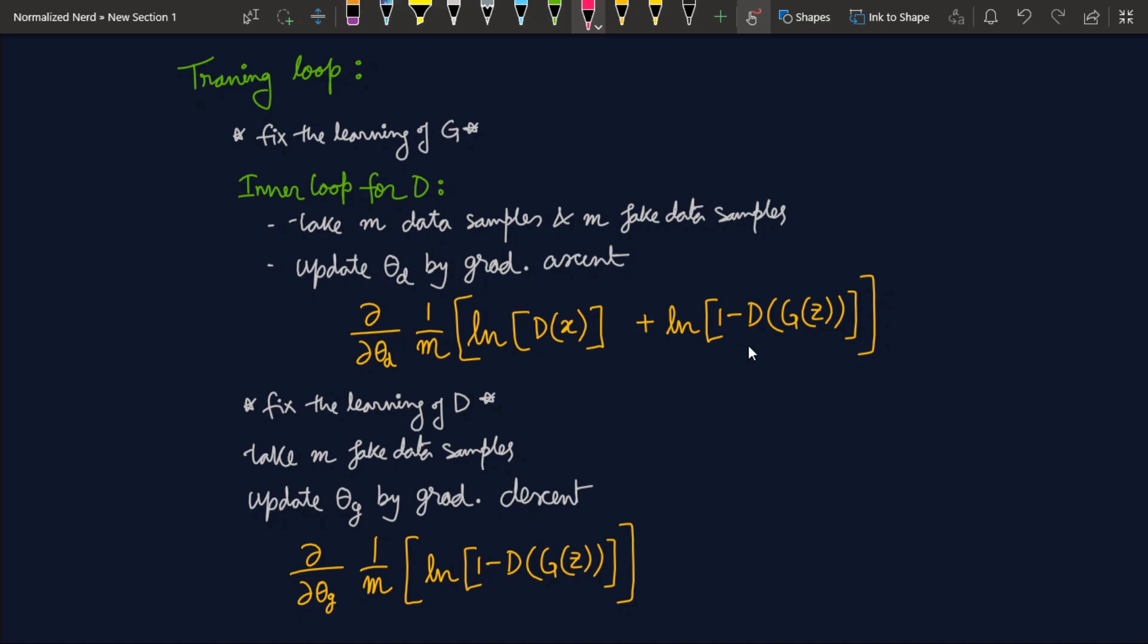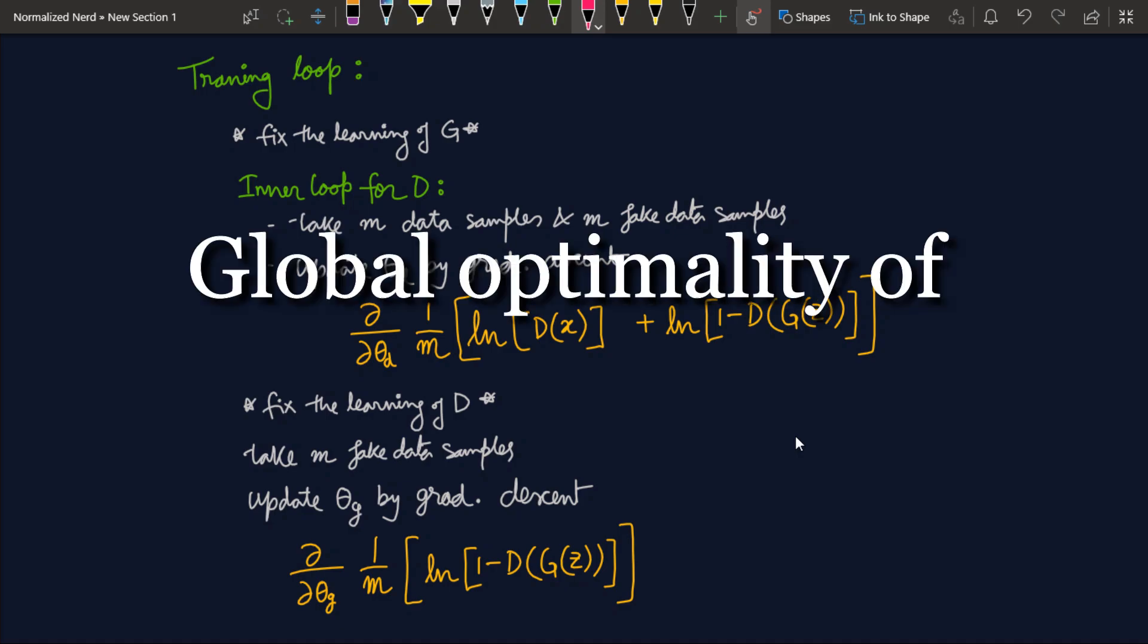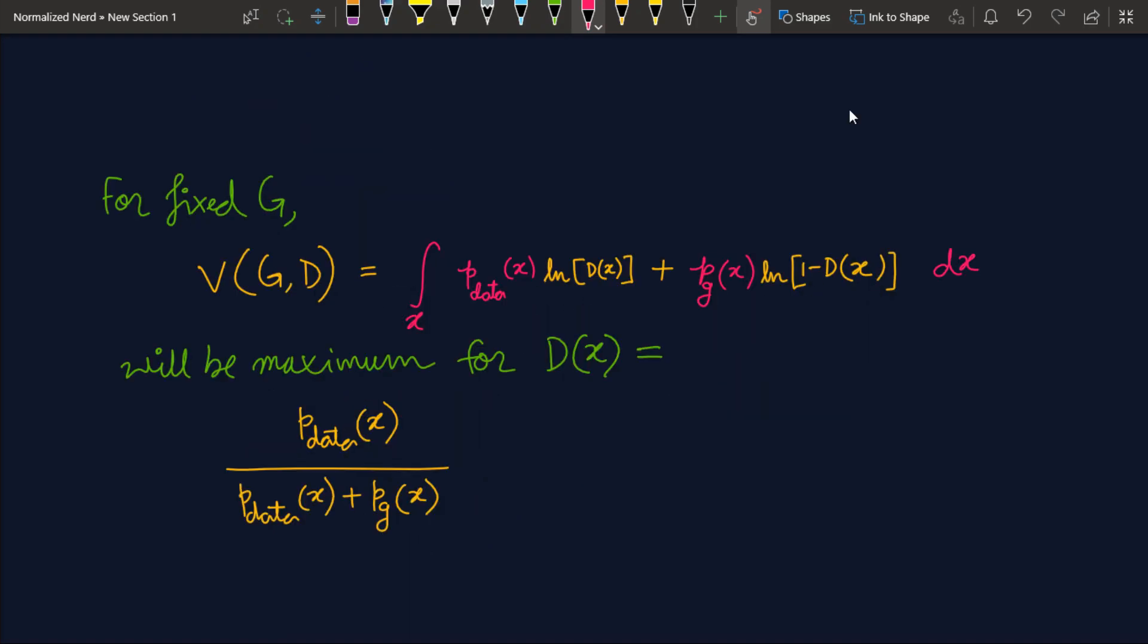Okay? If you have understood this video so far, then you know what is the value function for GAN and how we optimize this in practice. But if you are like me and wanna know what is the guarantee that our generator will surely replicate the original distribution, then take a deep breath and continue watching. Okay, just to be clear, we wanna prove that PG will converge to P data if our generator is able to find the global minimum for the value function. In other words, we want to show that PG is equal to P data at the global minimum of the value function.